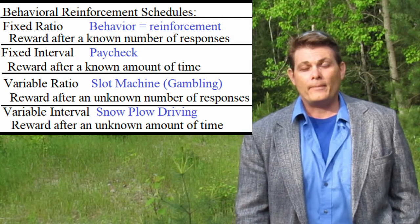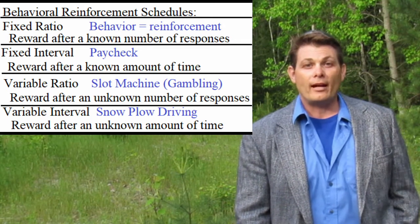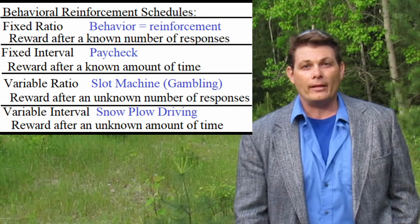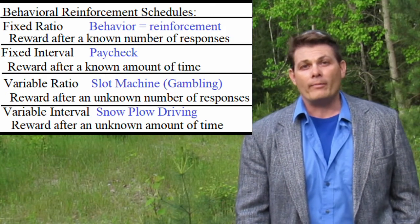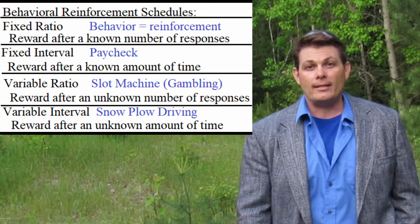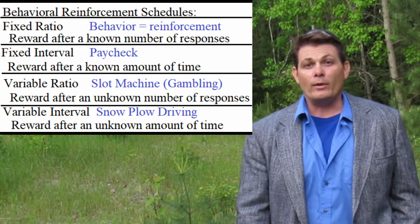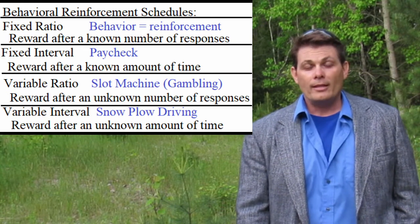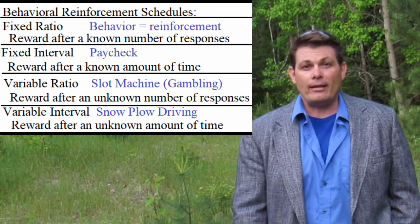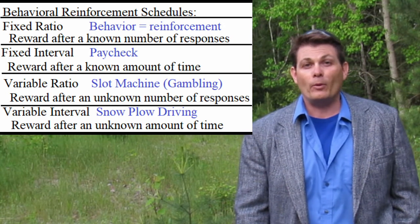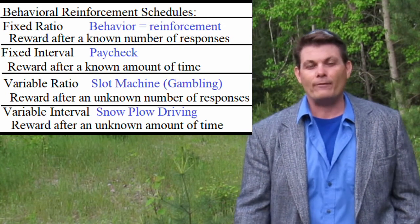The fourth type is called variable interval, in which the animal or person does not know when that next reward is coming — it's a reward after an unknown amount of time. For example, someone gets five cents every time they plow a driveway, but they don't know when it's going to snow. So it's a variable interval — they don't know when it will snow, but when it does, they'll get a five cent reward.